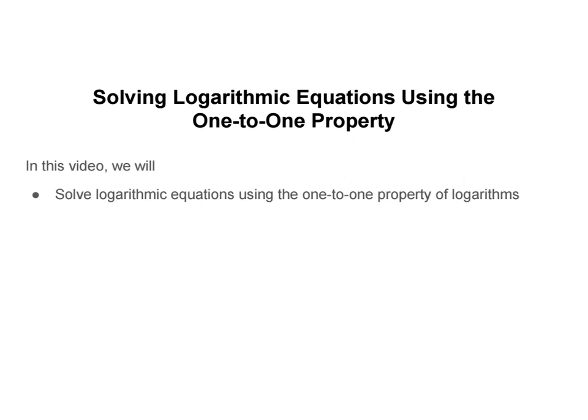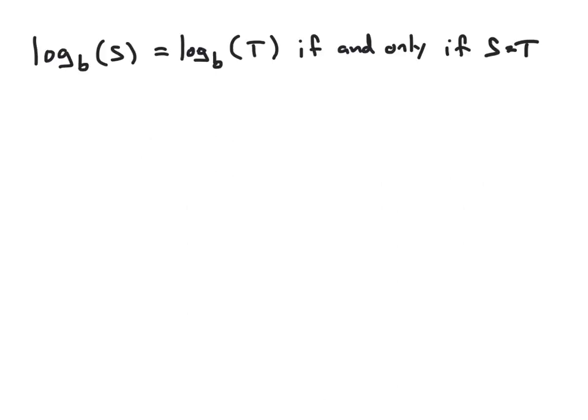In this video, we're going to look at solving logarithmic equations using the one-to-one property of logarithms. The one-to-one property states that log base b of s equals log base b of t if and only if s equals t, for any algebraic expressions s and t. So if we can write an equation in the form log of something equals log of something else, the two expressions inside the logarithms can be set equal by this property.